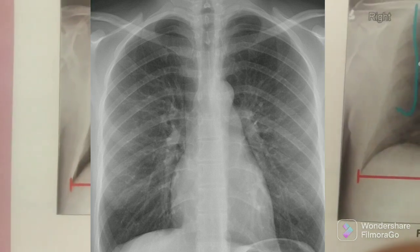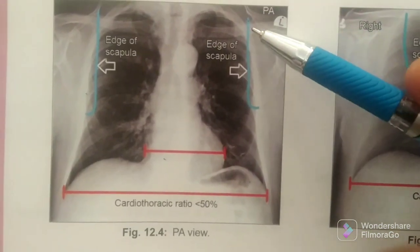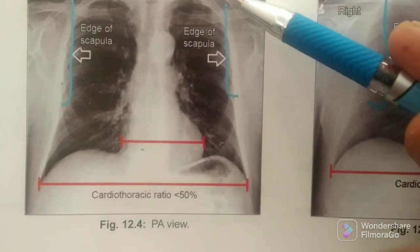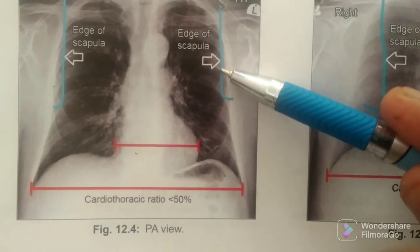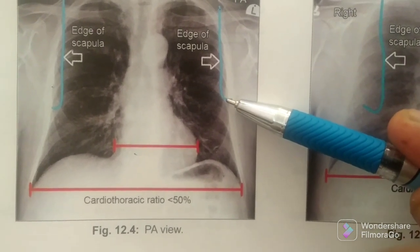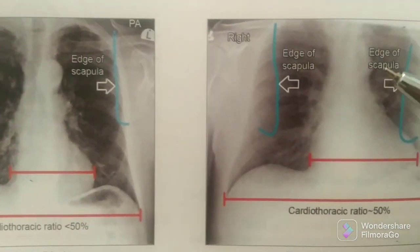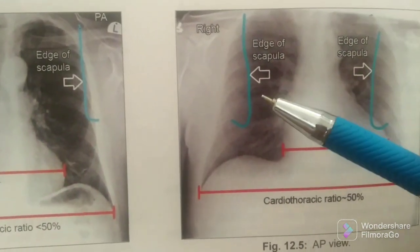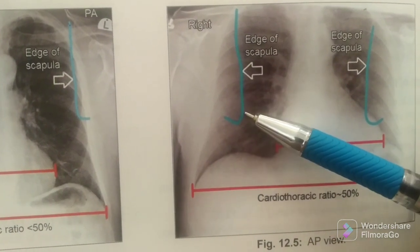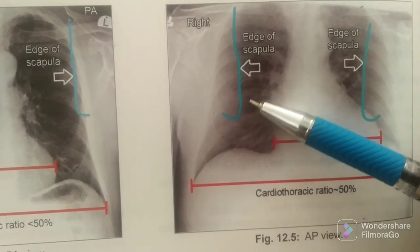The second thing is the scapula. The scapula's inner margin, denoted here by the blue line, is almost away from the lung field in PA view. Whereas in the AP view, the inner border is seen over the lung field.